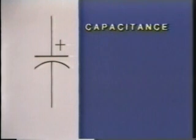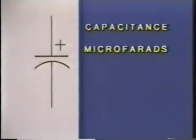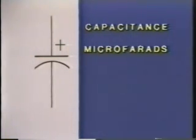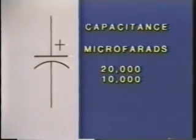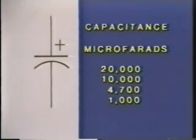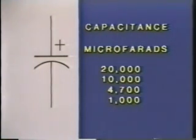The first rating of a capacitor is its capacitance. The capacitance is simply a measurement of the amount of charge the capacitor can store. We measure capacitance in microfarads. The more microfarads a capacitor has, the more of a charge the capacitor will store. Typically, we see capacitors that are 20,000, 10,000, 4,700, or 1,000 microfarads. There are other ratings as well, and we'll see plenty of different types of ratings of filter capacitors as we look at different power supplies in different games.